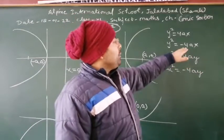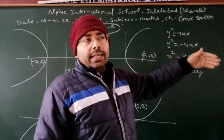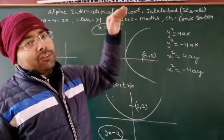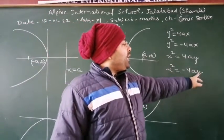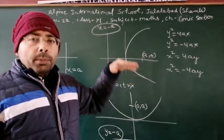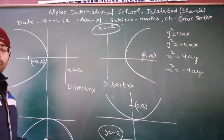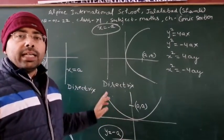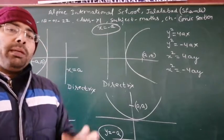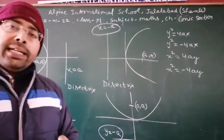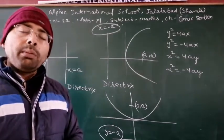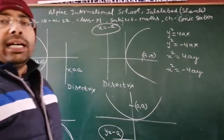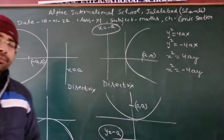In the first type, x is positive so it opens towards the positive x-axis; in the second, x is negative so it opens towards the negative x-axis; in the third, y is positive so it opens upward; in the fourth, y is negative so it opens downward — below the origin. The two arms of a parabola never intersect each other — they remain open to infinity and never join.